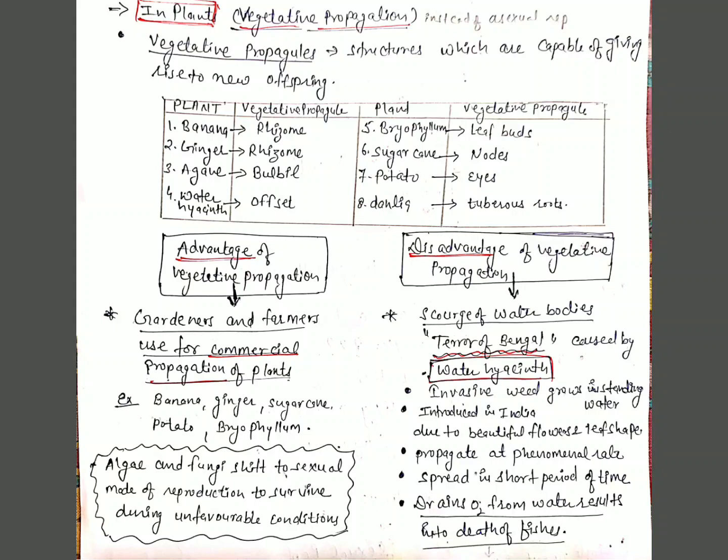Now we will see how asexual reproduction takes place in plants. The word vegetative propagation is used instead of asexual reproduction in plants. Here you can see a table with names of plants and their vegetative propagules — structures which help in vegetative propagation and are capable of giving rise to new offspring. Banana and ginger have rhizome; agave has bulbil; water hyacinth has offsets; Bryophyllum has leaf buds; sugarcane has nodes; potato has eyes; and Dahlia has tuberous roots.